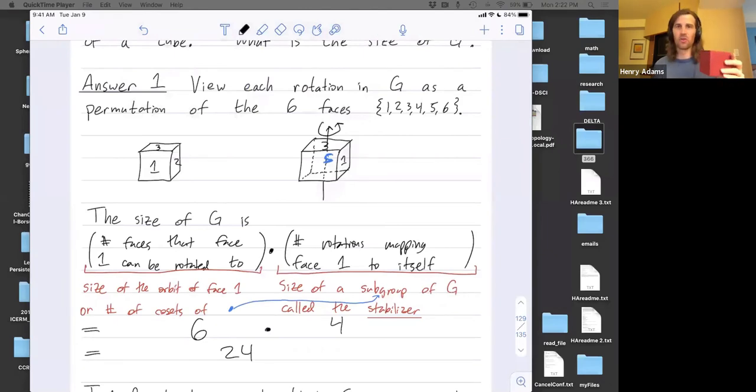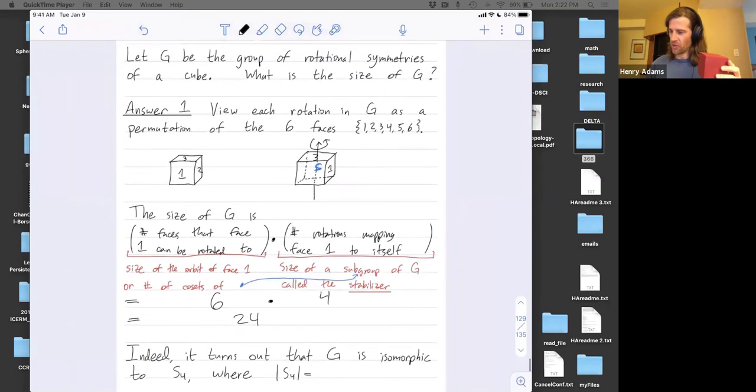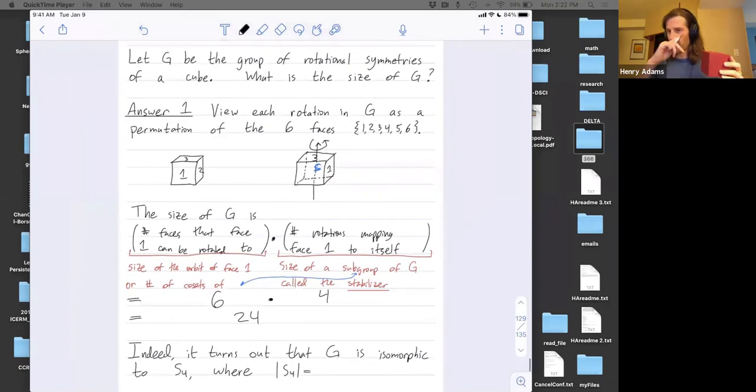6 times 4 is 24. This is only counting the size of the group of rotational symmetries of the cube.